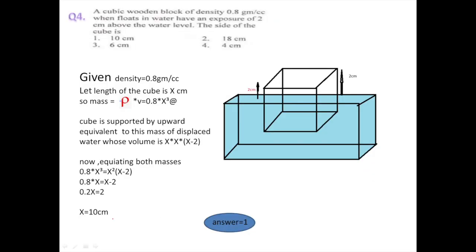The fourth question: a cubic wooden block of density 0.8 gram per centimeter cube floats in water with an exposure of 2 centimeter above the water level. What is the side of the cube? Suppose this cube has density 0.8 gram per centimeter cube and floats in water, with 2 centimeter above the water surface. Let the length of the cube be x centimeter, so the whole side is x. We know that mass equals density times volume, so mass = 0.8 × x³.